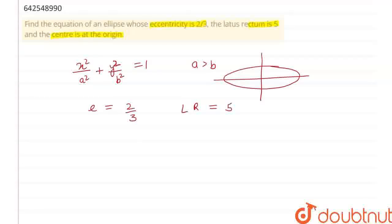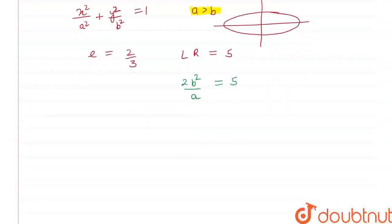And we also know that for a is greater than b, the length of latus rectum is equal to 2b square upon a which is equal to 5. Therefore my b square is equal to 5 by 2 times a.